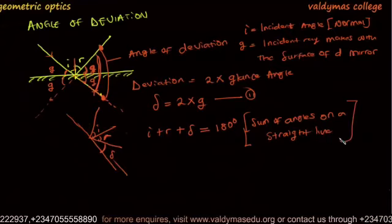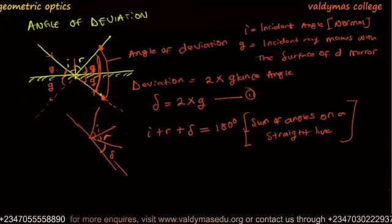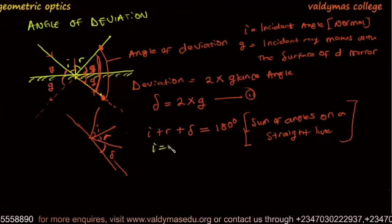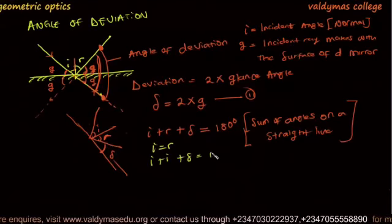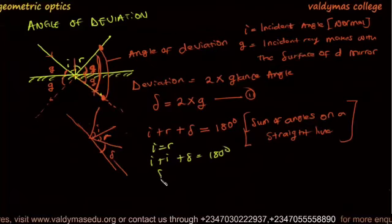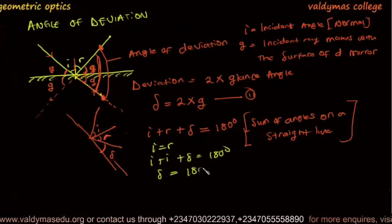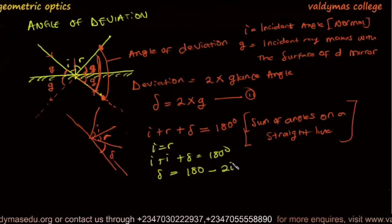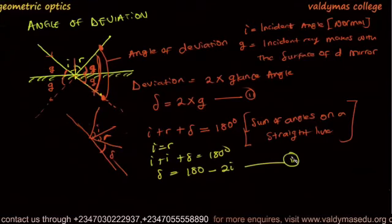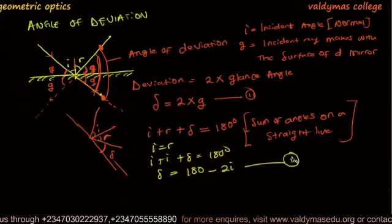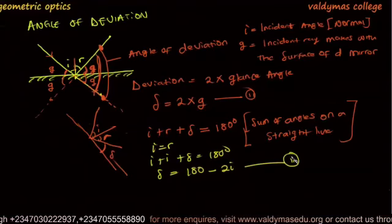But we already know from the laws of reflection that I is equal to R, so we have I plus I plus deviation equals to 180 degrees. So deviation equals to 180 minus 2I. This is another formula for the angle of deviation.